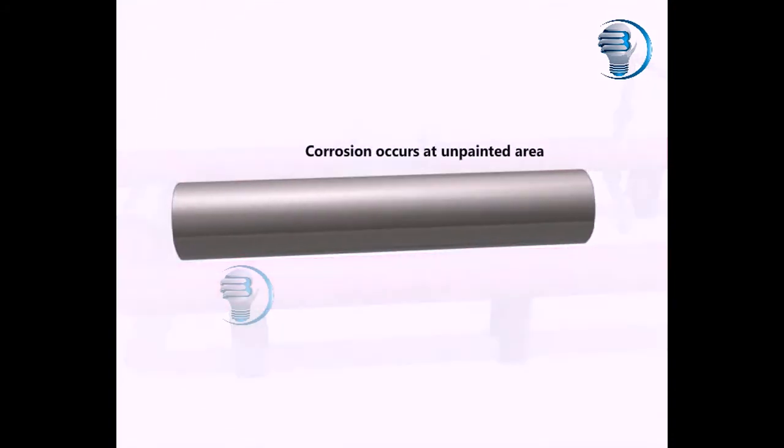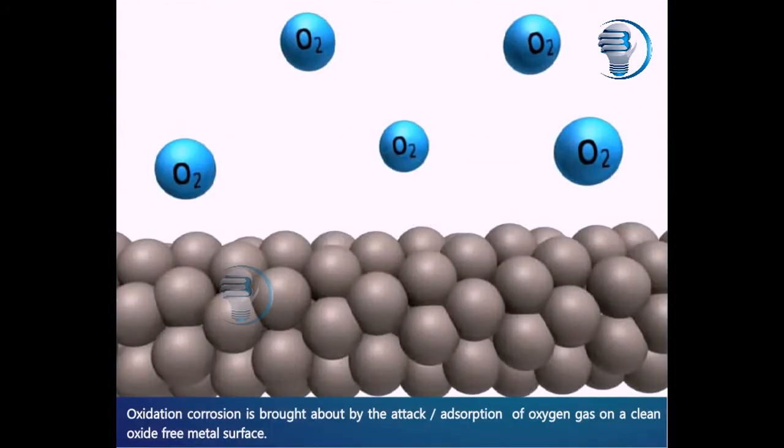Corrosion occurs at unpainted areas. Oxidation corrosion is brought about by the attack or adsorption of oxygen gas on a clean, oxide-free metal surface.